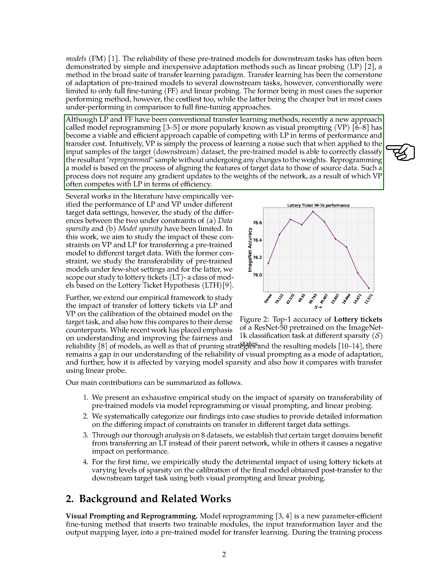The idea behind visual prompting is to learn a type of noise that, when applied to the input samples of the target dataset, allows the pre-trained model to correctly classify the reprogrammed sample without any changes to the model's weights. This process aligns the features of the target data with those of the source data, and it doesn't require any updates to the network's weights, making it a highly efficient method.